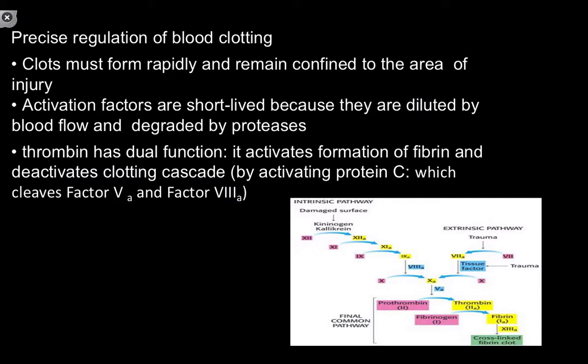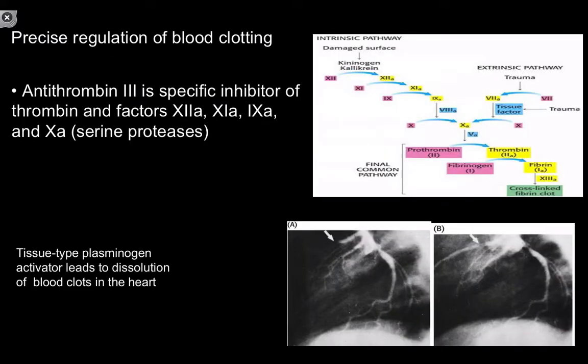Thrombin is actually the master regulator of this cascade — it not only activates other factors in the cascade but also activates protein C, which ends up shutting off this pathway. Protein C has many other biological functions as well. Antithrombin 3 is a specific serpin that also plays a role in inhibiting these pathways.